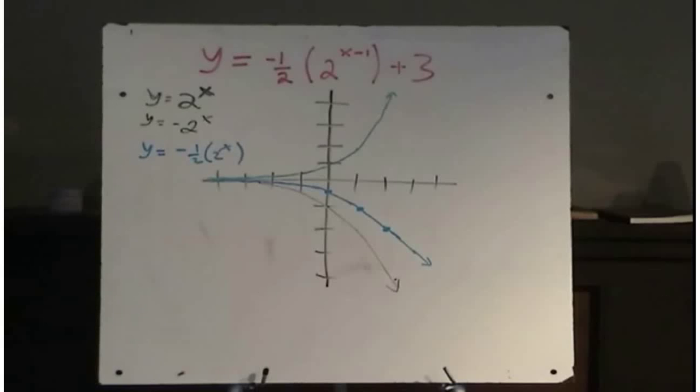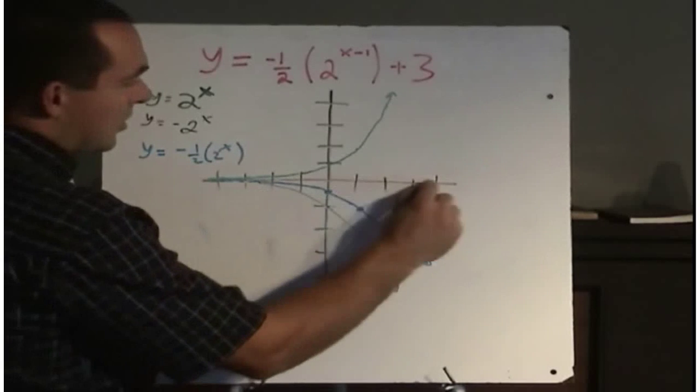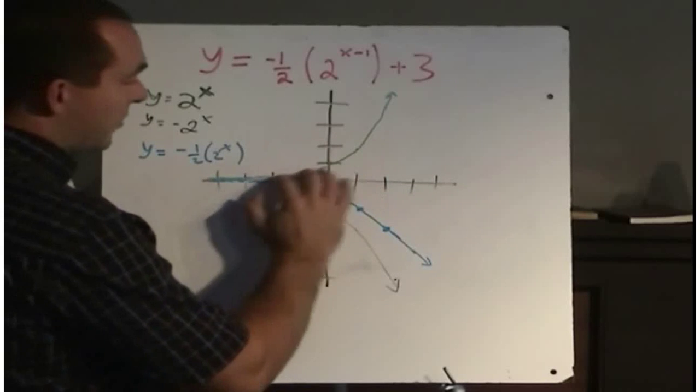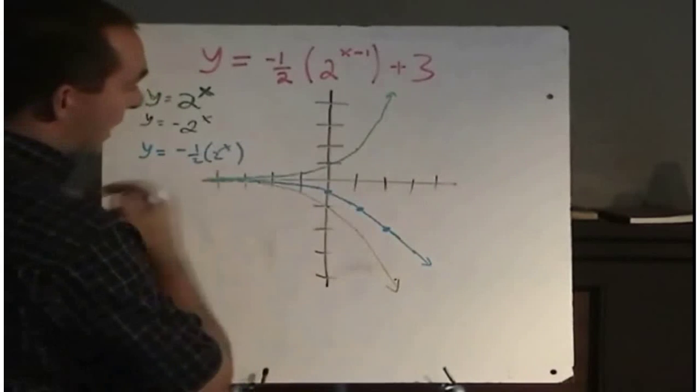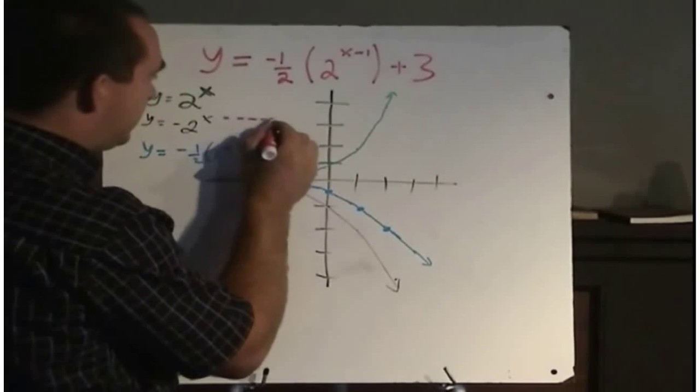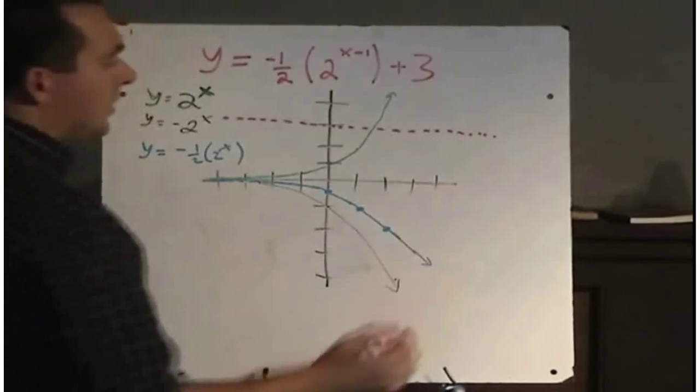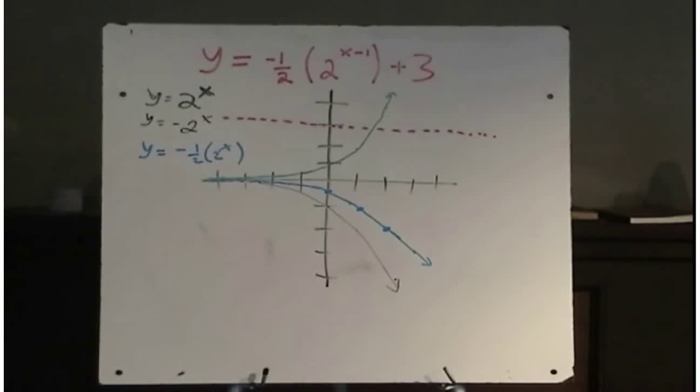And then we have, don't forget, we have our asymptote. So the asymptote of the function is right along the x-axis here. But we're going to move this whole thing right 1 and up 3. So our asymptote, if we move this right 1 and up 3, will now be centered along the line y equals 3.